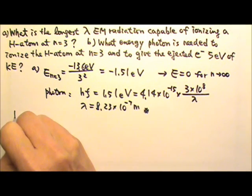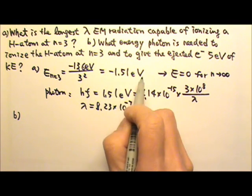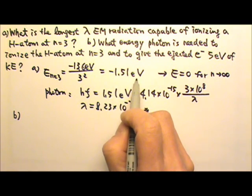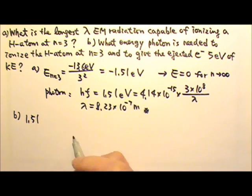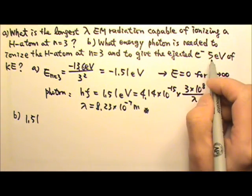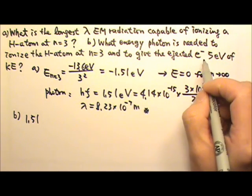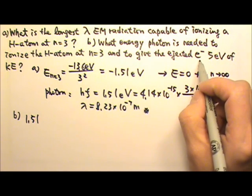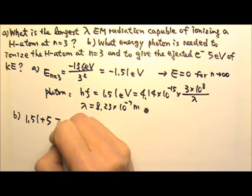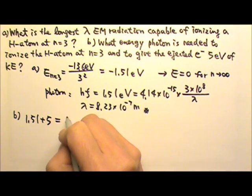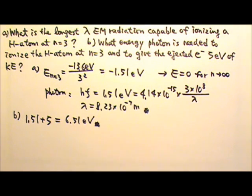Part B. We want to ionize the hydrogen atom from n equals 3, which means we have to provide 1.51 eV of energy. But we also want to have 5 electron volts left over for the electron's kinetic energy. So 5 extra eV is what we need. Therefore, the photon has to bring in 6.51 eV of photon energy.